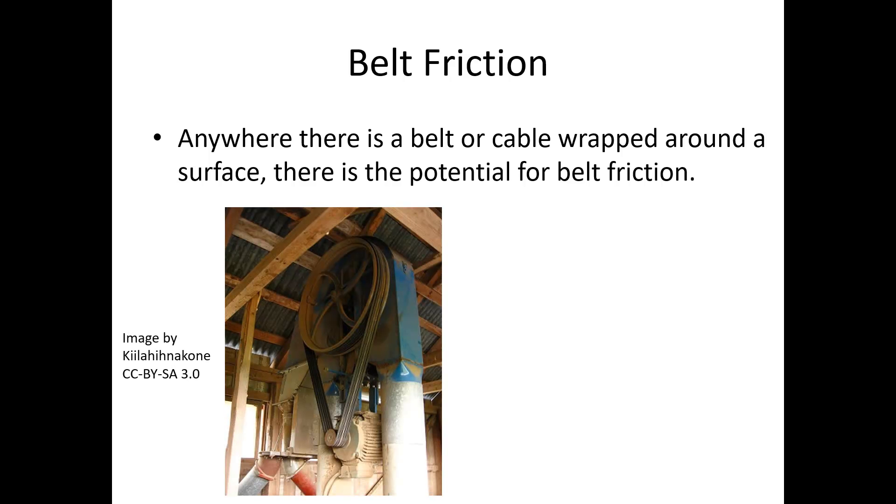Anywhere that a belt or cable is wrapped around a surface, there's potential for belt friction. This could be something that is helpful. Here we are using a belt wrapped around two pulleys, transmitting a torque from the input down at the motor up to the blower at the top. We want the belt friction to drive the belt around and transfer the moment from one side to the other.